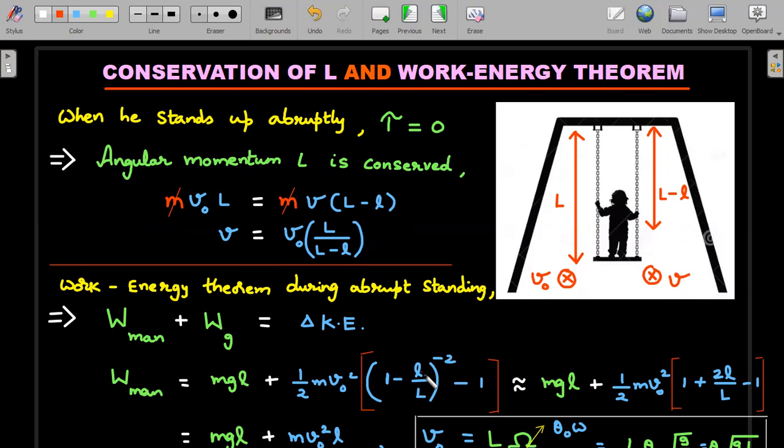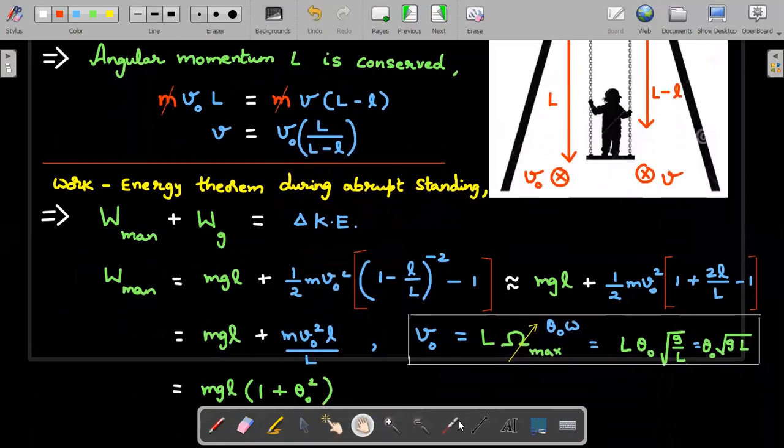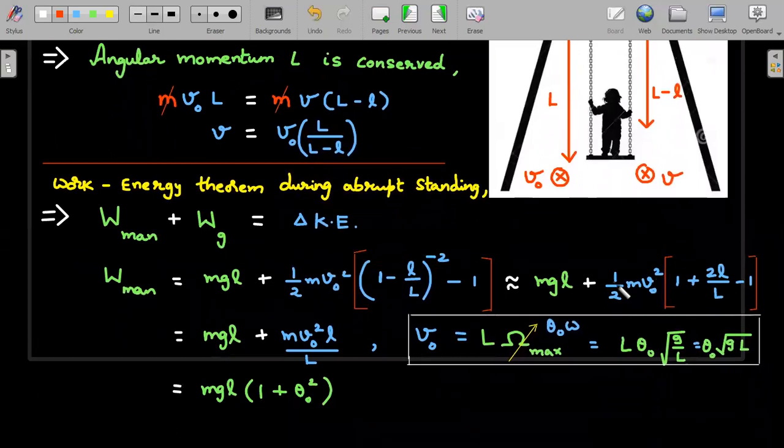I'll take only first two terms of this binomial approximation - that's why this approximate symbol was written. This number becomes 1 plus 2l by L and this minus one cancels this one and makes this a very simple product. The blue expression boils down to this - so this is the final answer.